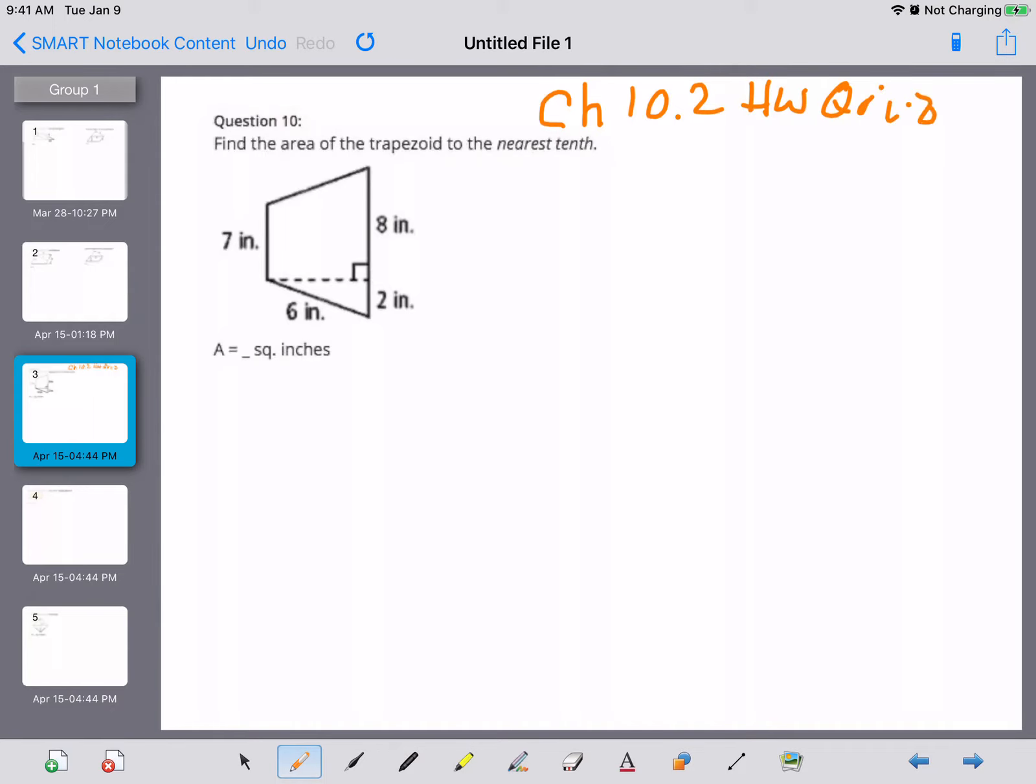A couple of things you have to recognize is that first thing you have to do is be able to recognize the shape you're working with. The shape we have is a trapezoid and know what formula goes with a trapezoid. The area of a trapezoid is one-half the height times the two bases added together.